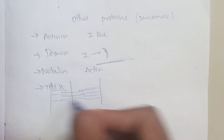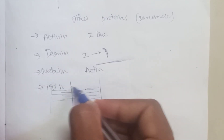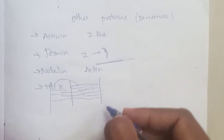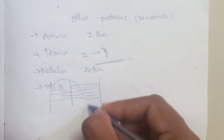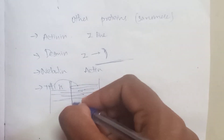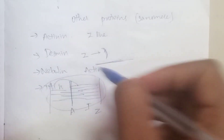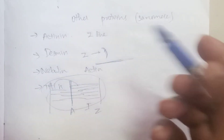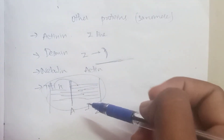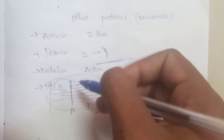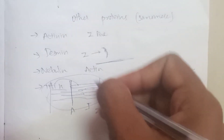The M-line is at the center of the sarcomere. Titin spans the I-band and the A-band connecting to the M-line. Titin is an elastic protein - it allows the muscle to stretch and then return, acting like a spring or scaffolding to maintain sarcomere structure.